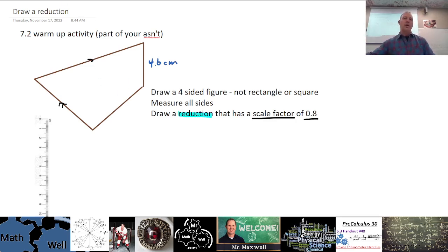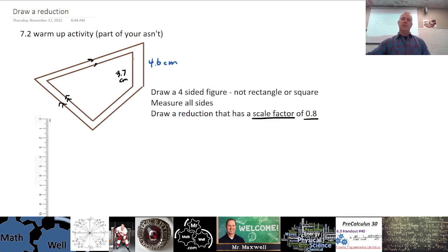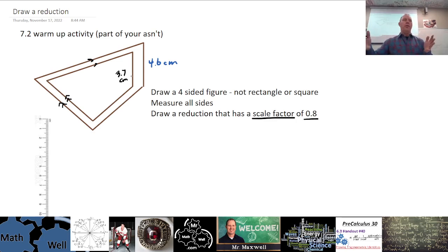When you multiply 4.6 times 0.8 you get 3.7, rounded to the nearest tenth. The easiest way to do this is to draw your reduction inside the original. So it would look like this — there's the 3.7 — and you do that to all of the sides to make the exact same shape but reduced by 0.8. A reduction has a scale factor that's less than 1, between 0 and 1.